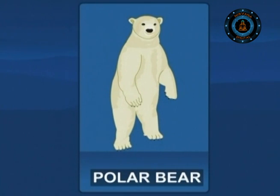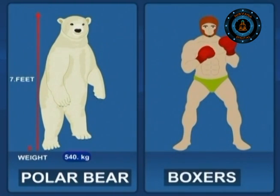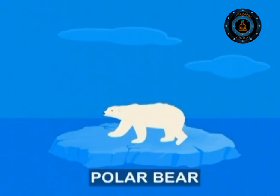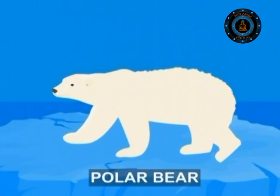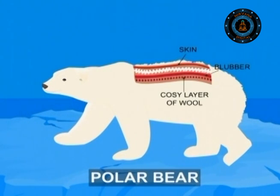The ideal animal to survive the North Pole is the polar bear. It is 7 feet tall and weighs 540 kilograms — equivalent to about 5 heavyweight boxers. Much of a polar bear's weight is just fat. Underneath the skin, polar bears have a blanket of blubber several centimetres deep. But blubber is only one layer of the bear's clothing; after it comes a cozy layer of wool, and on the outside there is a thick fur coat made up of long hard guard hairs.